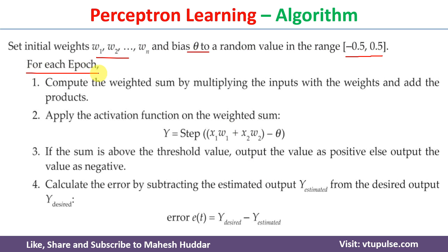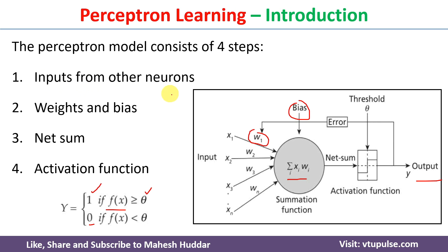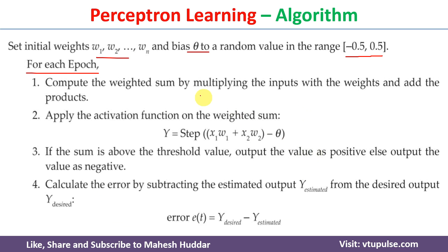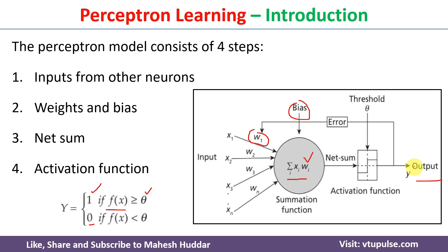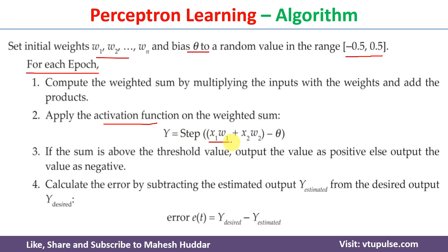For each epoch, until we are able to classify each and every example correctly, we perform the following steps. In the first step, we compute the weighted sum using the inputs and the weights. Then we apply the activation function on top of that weighted sum to calculate the output — again, just for explanation purposes I have taken the step activation function here.